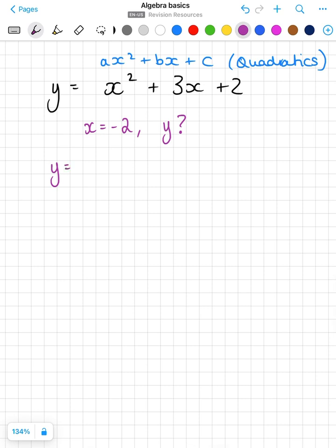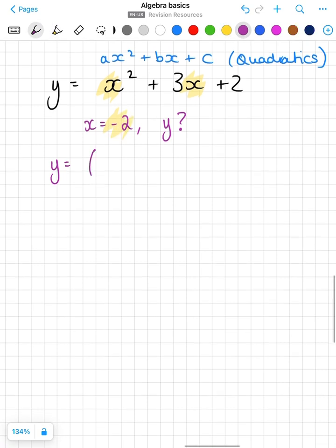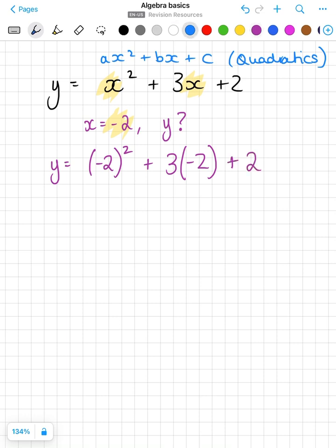So y equals, we're substituting in our value for x, so where there is an x it's no longer x, it's minus 2. So that's minus 2 squared plus 3, and then instead of the x we put a bracket to show minus 2. So that's minus 2 squared, minus 2 times minus 2 is 4, 3 times minus 2 that's minus 6, plus 2. So that's 4 take away 6 which is minus 2, add 2 which is 0.